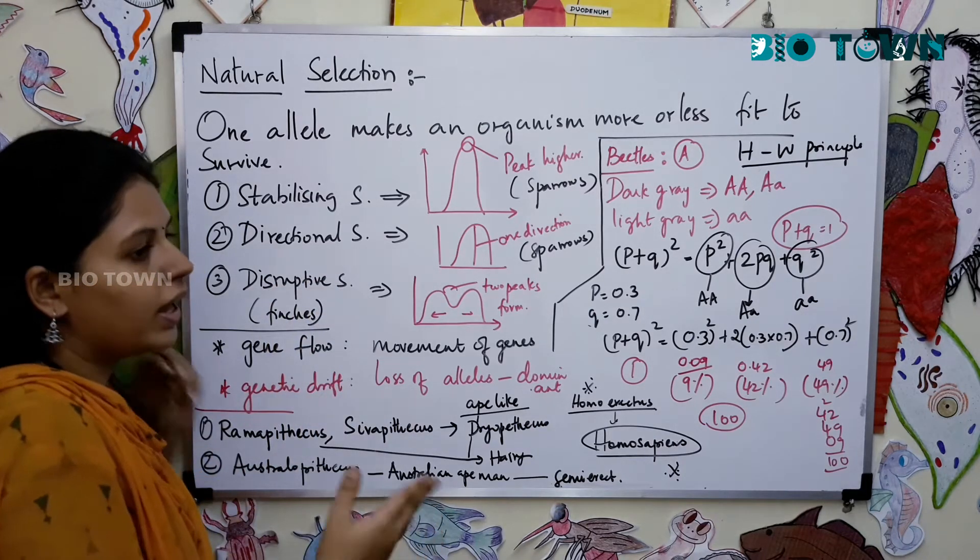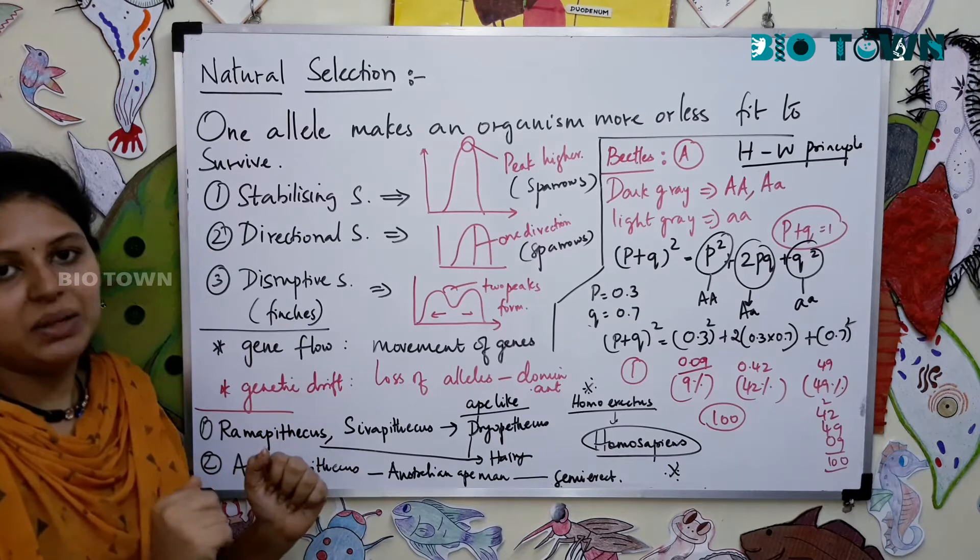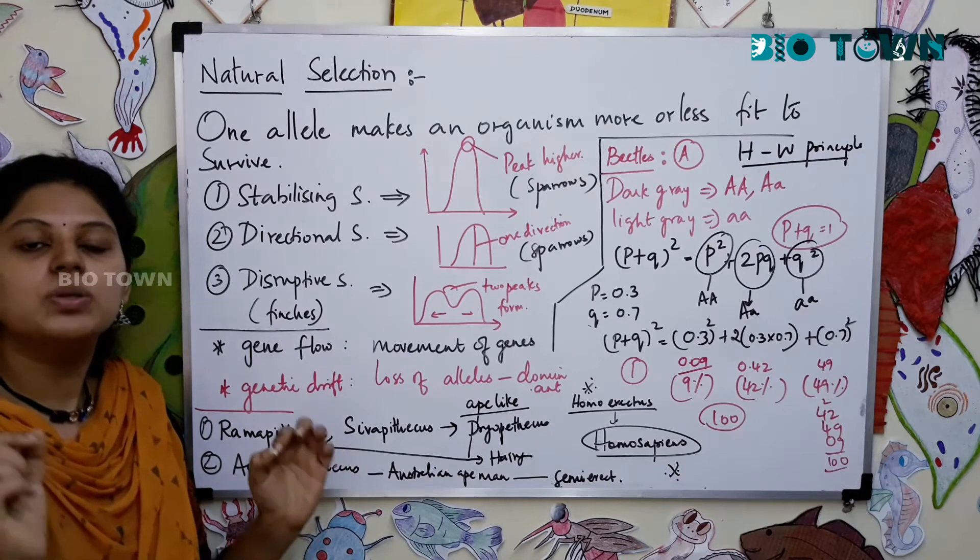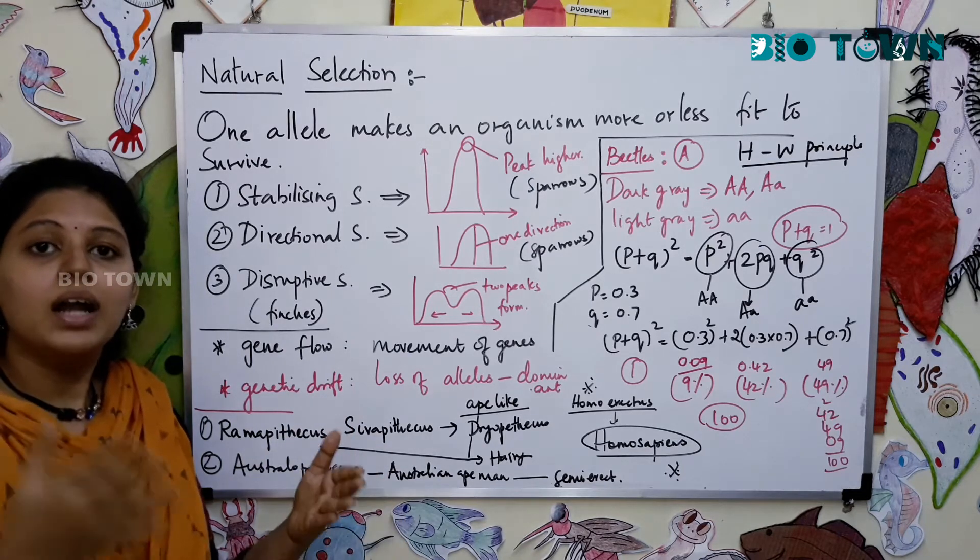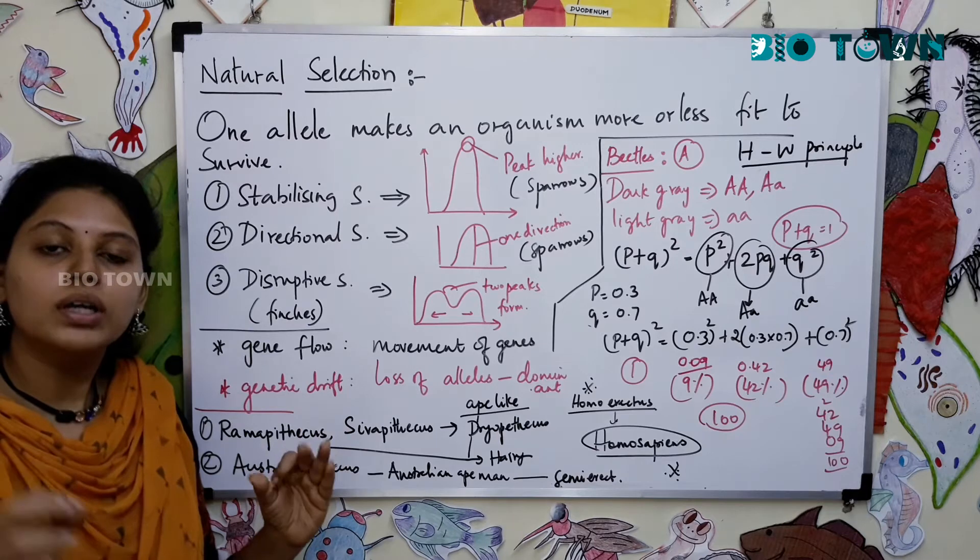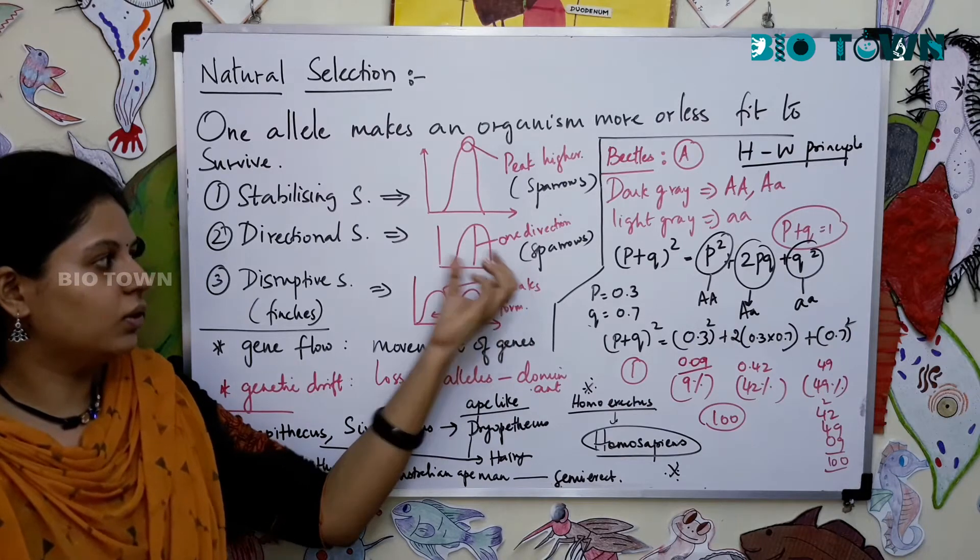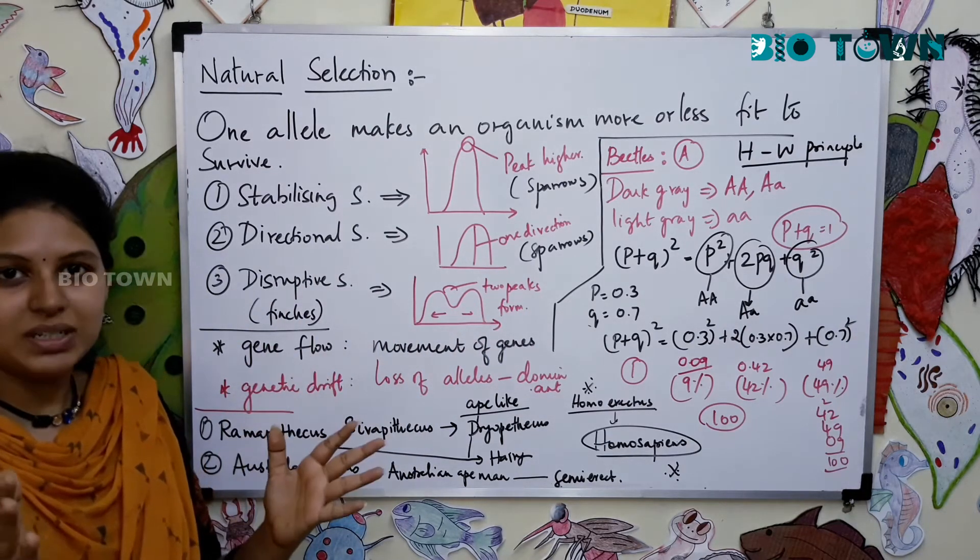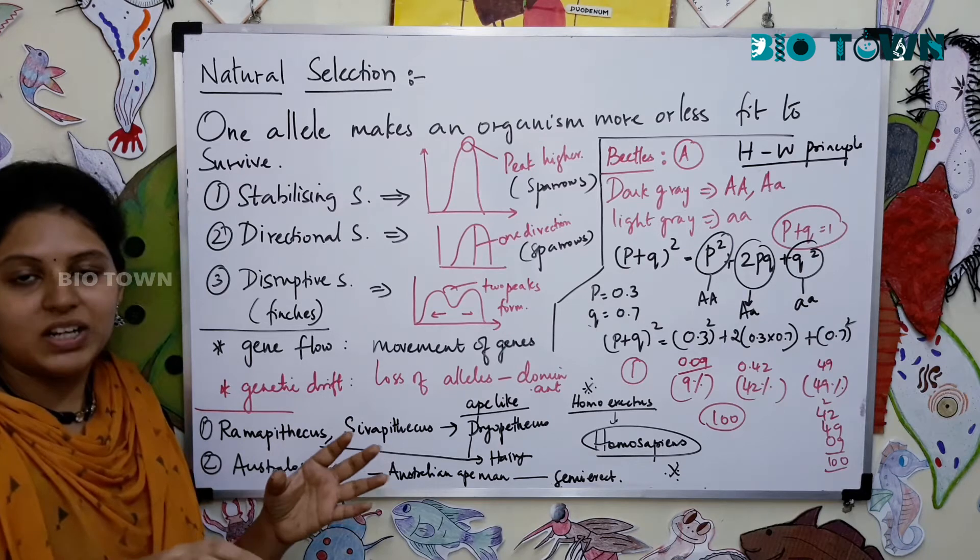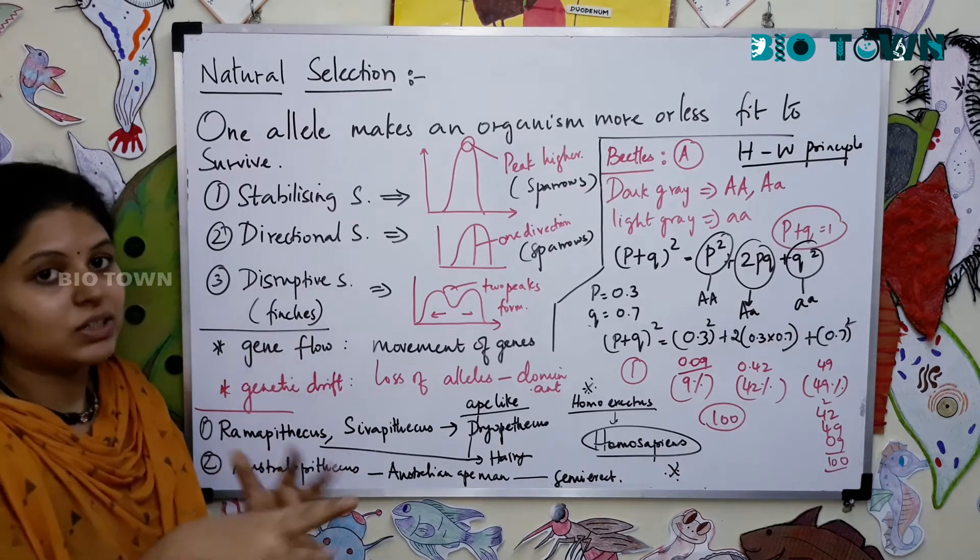Next is directional selection where the direction moves from one point to the other point. For example, these sparrows are happily living and suddenly there is a drought or some natural calamities which make these sparrows not survive. The sparrows which manage to escape from the particular natural calamity will alone survive. It could lead in any direction of the curve, they could make them move towards any one direction, relatively reduce in population with lesser males, greater females, or greater males and lesser females.